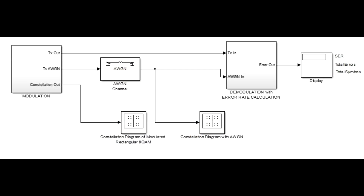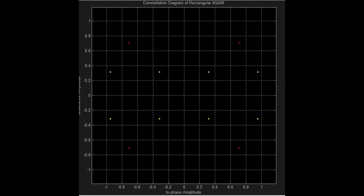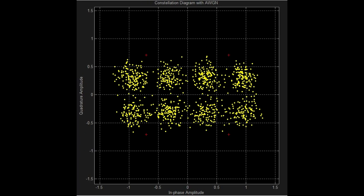This is the Simulink model to generate the constellation diagram for 8QAM. There are two parts: the modulation part and the demodulation part. The constellation diagram of 8QAM is shown, followed by the constellation diagram of 8QAM with noise.